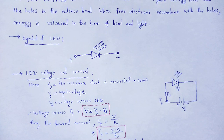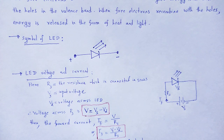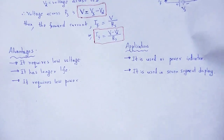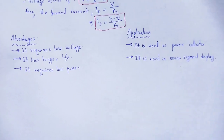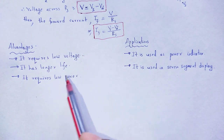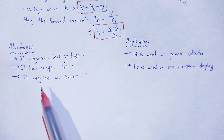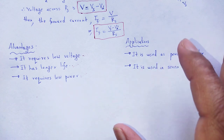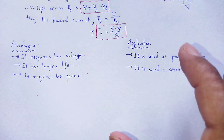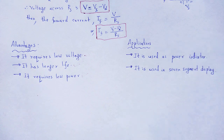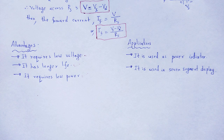Basically, there are many advantages of the light emitting diode. The advantages are: it requires low voltage, it has a longer life, it requires low power, and it is a solid light source. Solid light source means we can replace the incandescent lamp — the lamp which obtains light by heating a filament. That kind of lamp is avoided by using the LED.